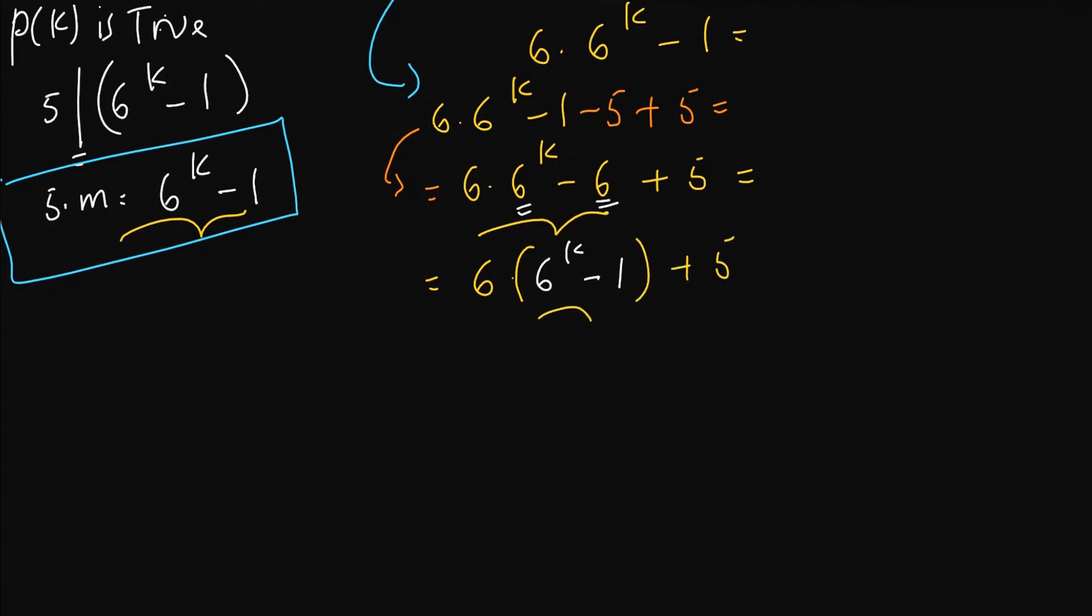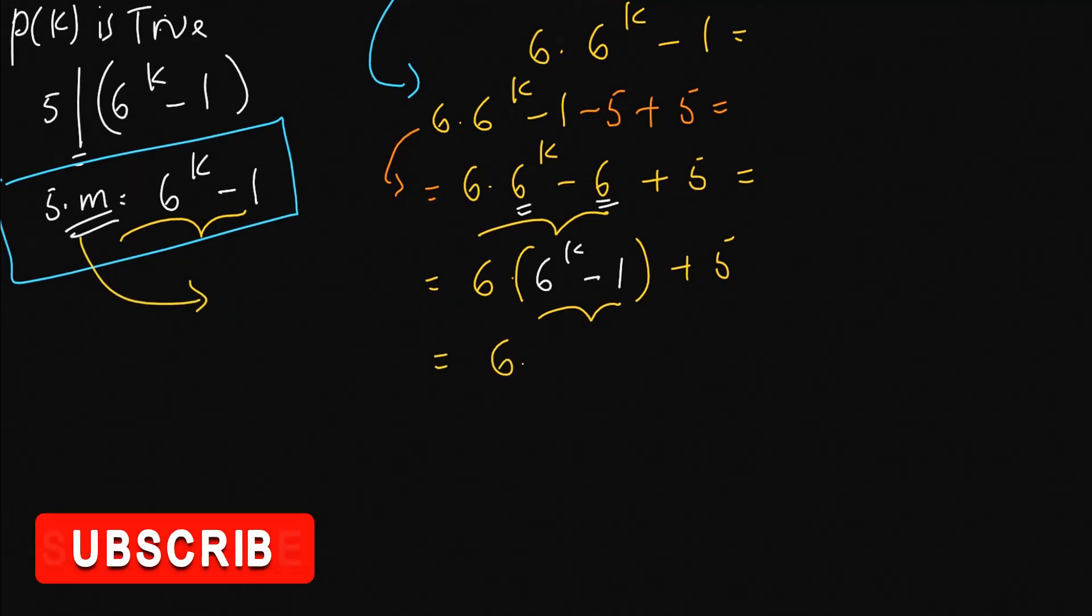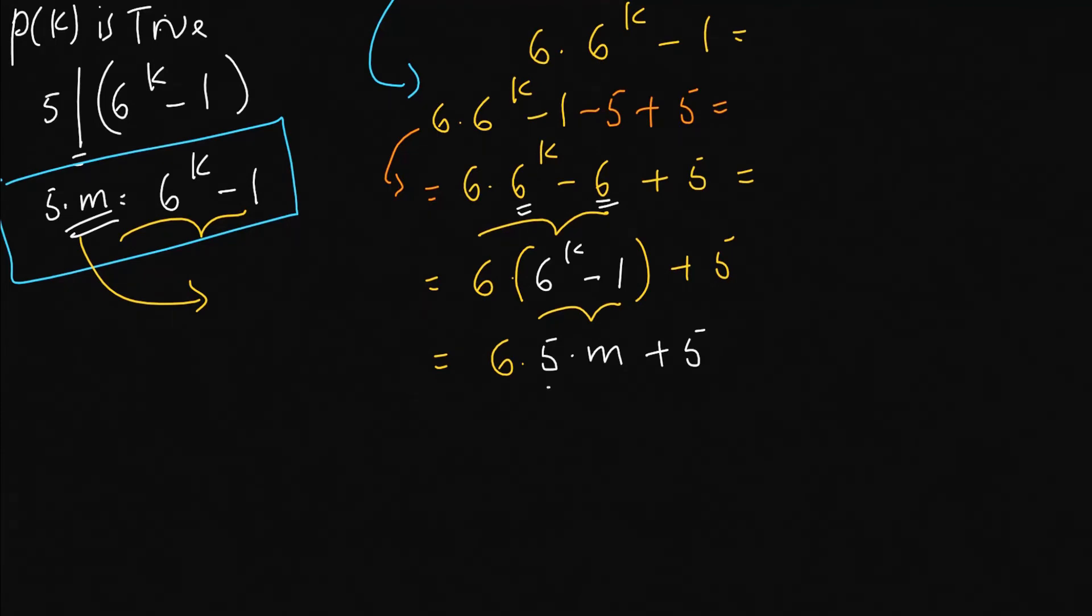So here in the bracket we have this number. This is equal to 6 times 6 to the power of k minus 1. By assumption, this equals 5 times some positive integer m. Now, this is 6 times 5m plus 6 minus 6, which equals 6 times 5m.